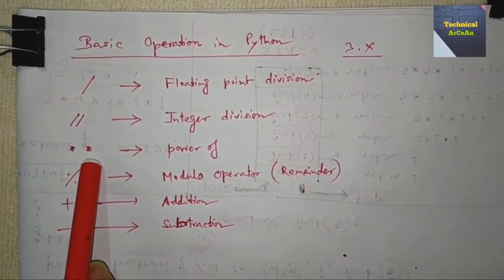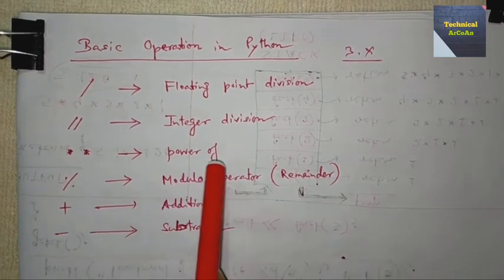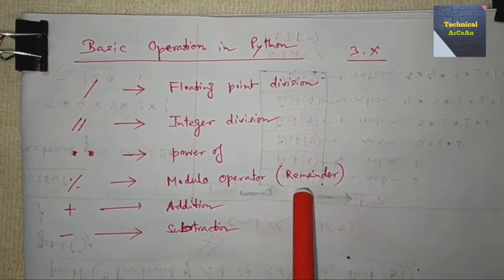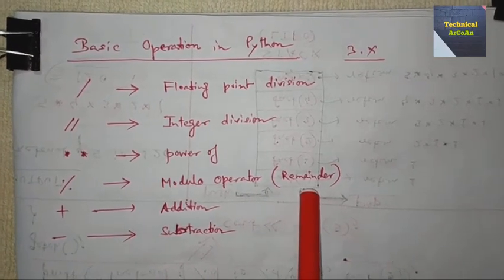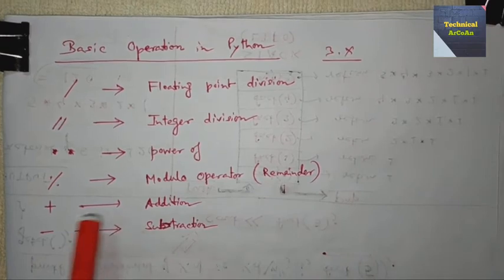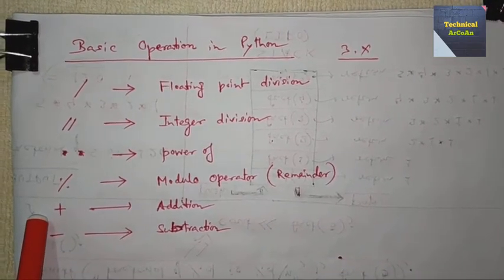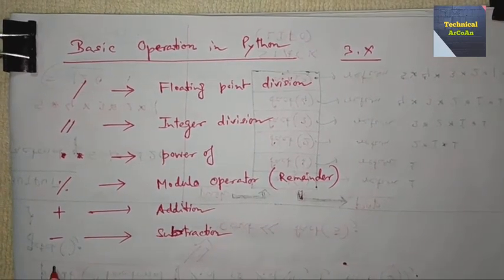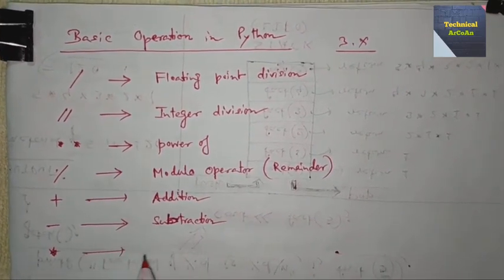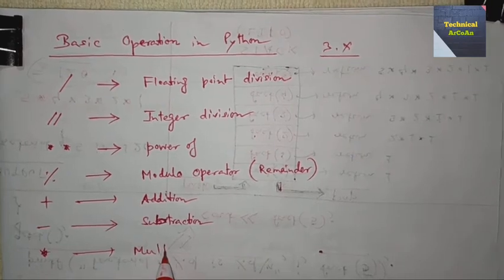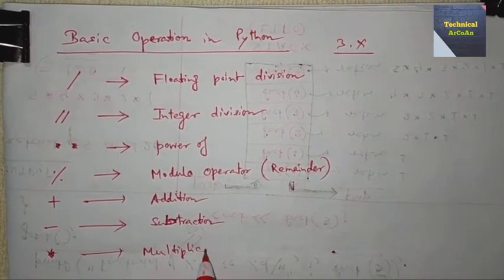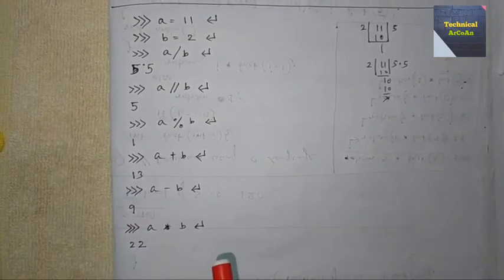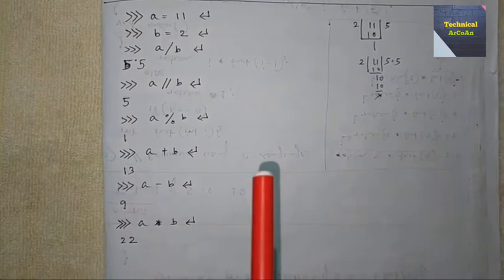Double asterisk is used for power of. The percent sign is the modulo operator - we use it to find the remainder of any division. And the more familiar ones: plus for addition, minus for subtraction, and single asterisk for multiplication.